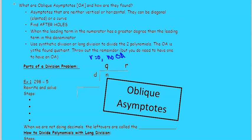So let's go over parts of a division problem. We have n divided by d, where n is the numerator, also known as the dividend.